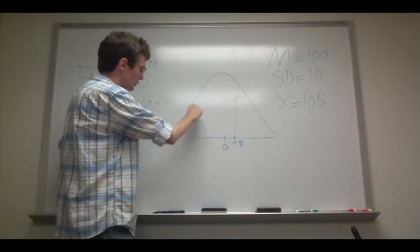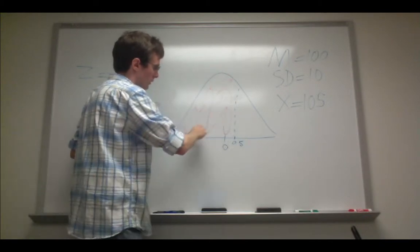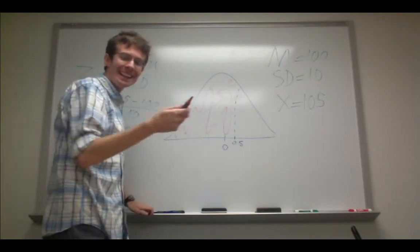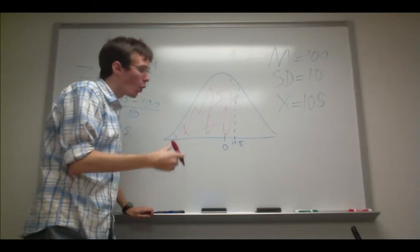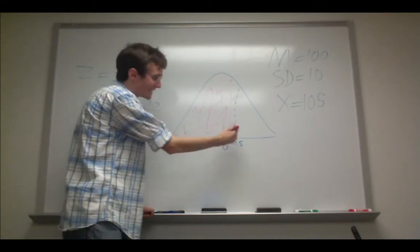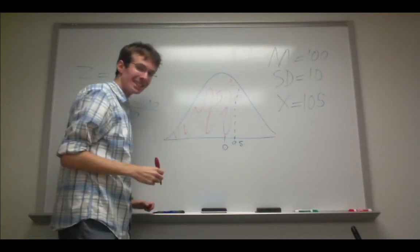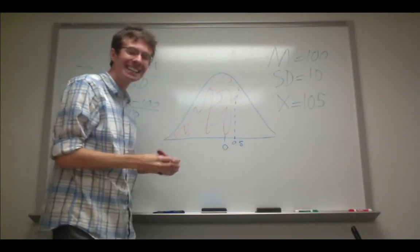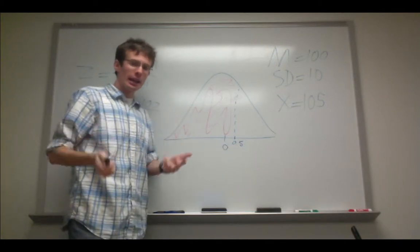So if we shaded in this entire distribution up until that score, that would tell us the percentile rank or how much of the distribution is at or below that score. It's the same idea behind standardized tests such as the GRE and the SAT.